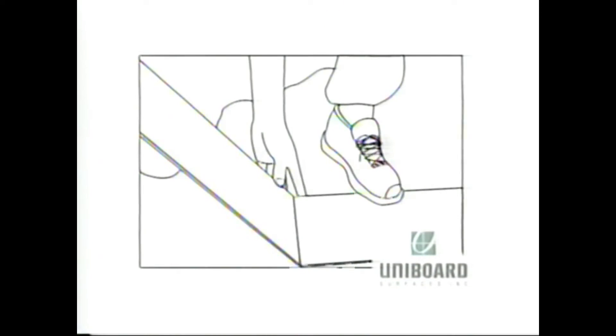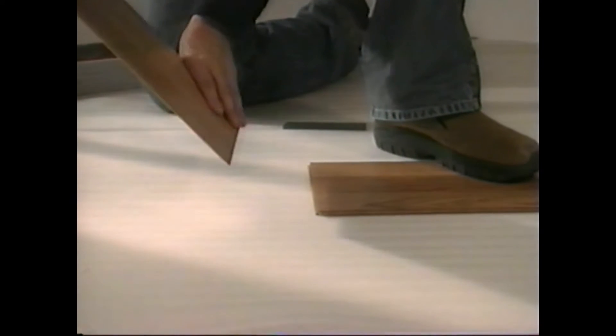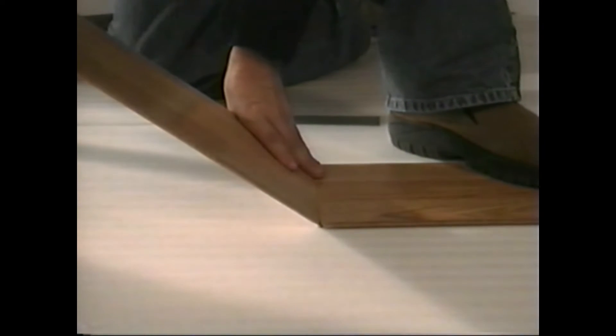Installing the First Row: Insert the end tongue of the plank in the end groove of the previous plank at a 45 degree angle. Lower the plank onto the base floor.